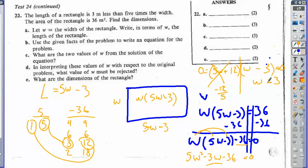All right, so now I know the width of the rectangle is 3. That would mean the length would be 12, because 5 times 3 is 15, minus 3 is 12. So the length is 12.